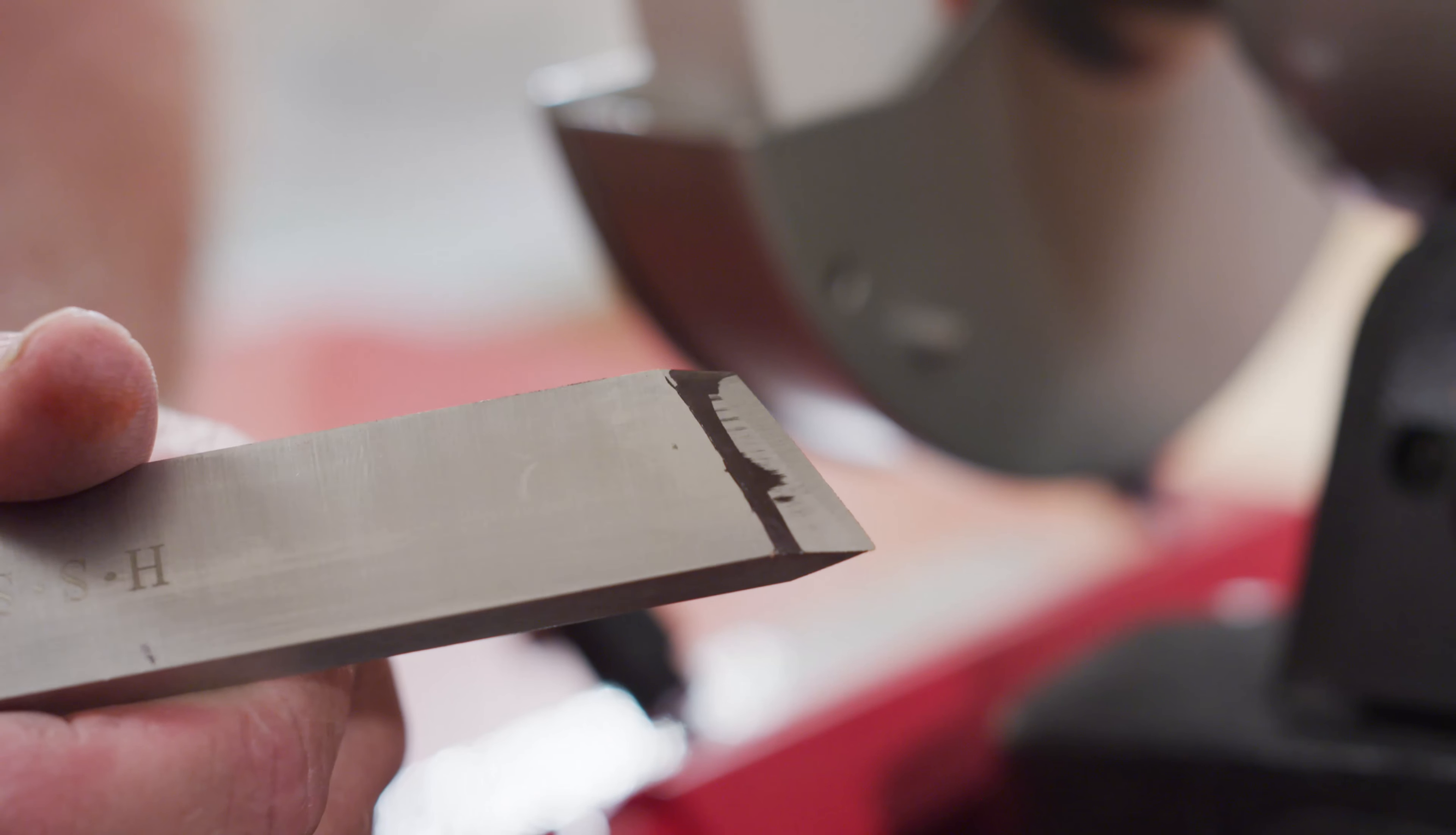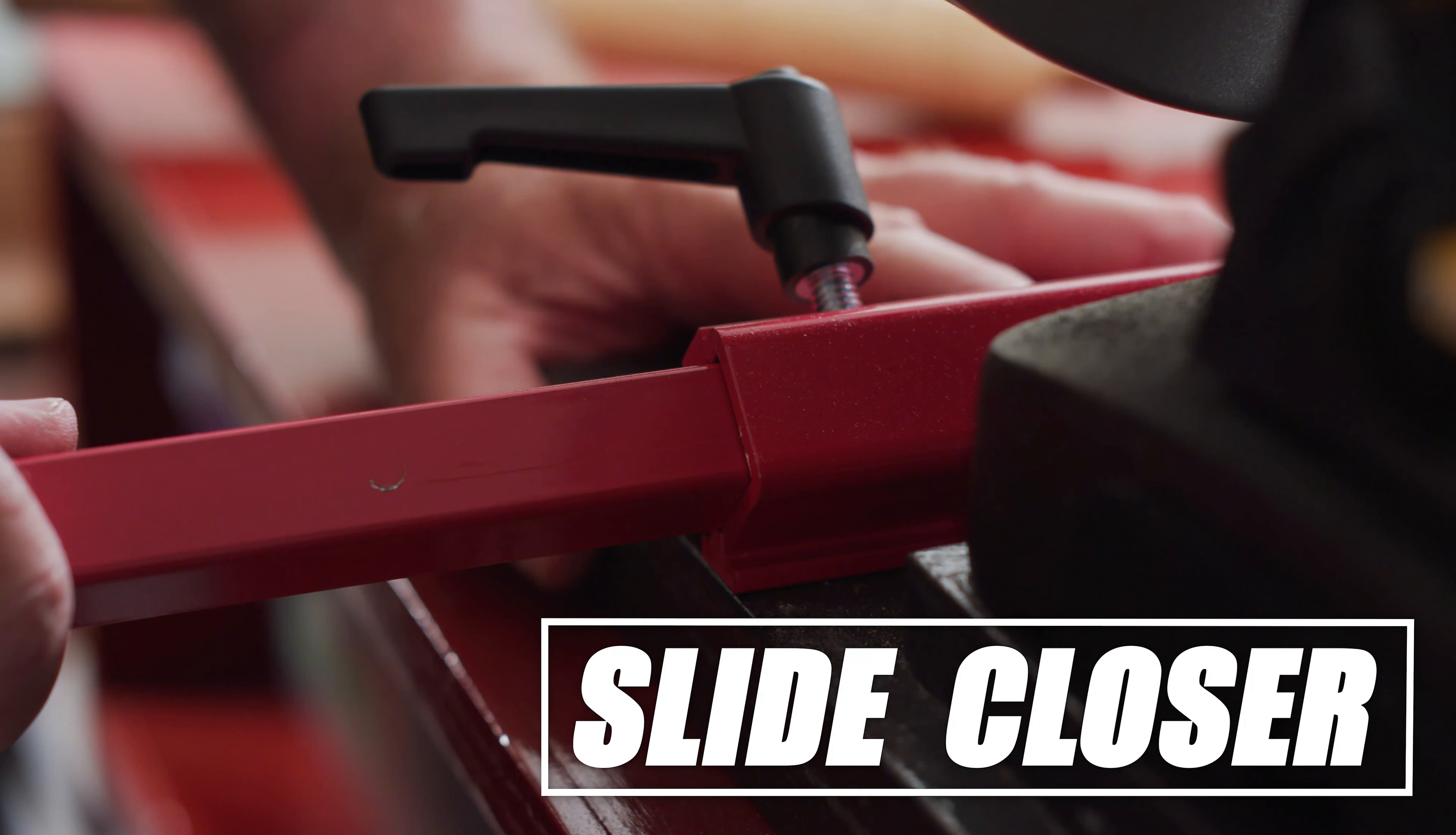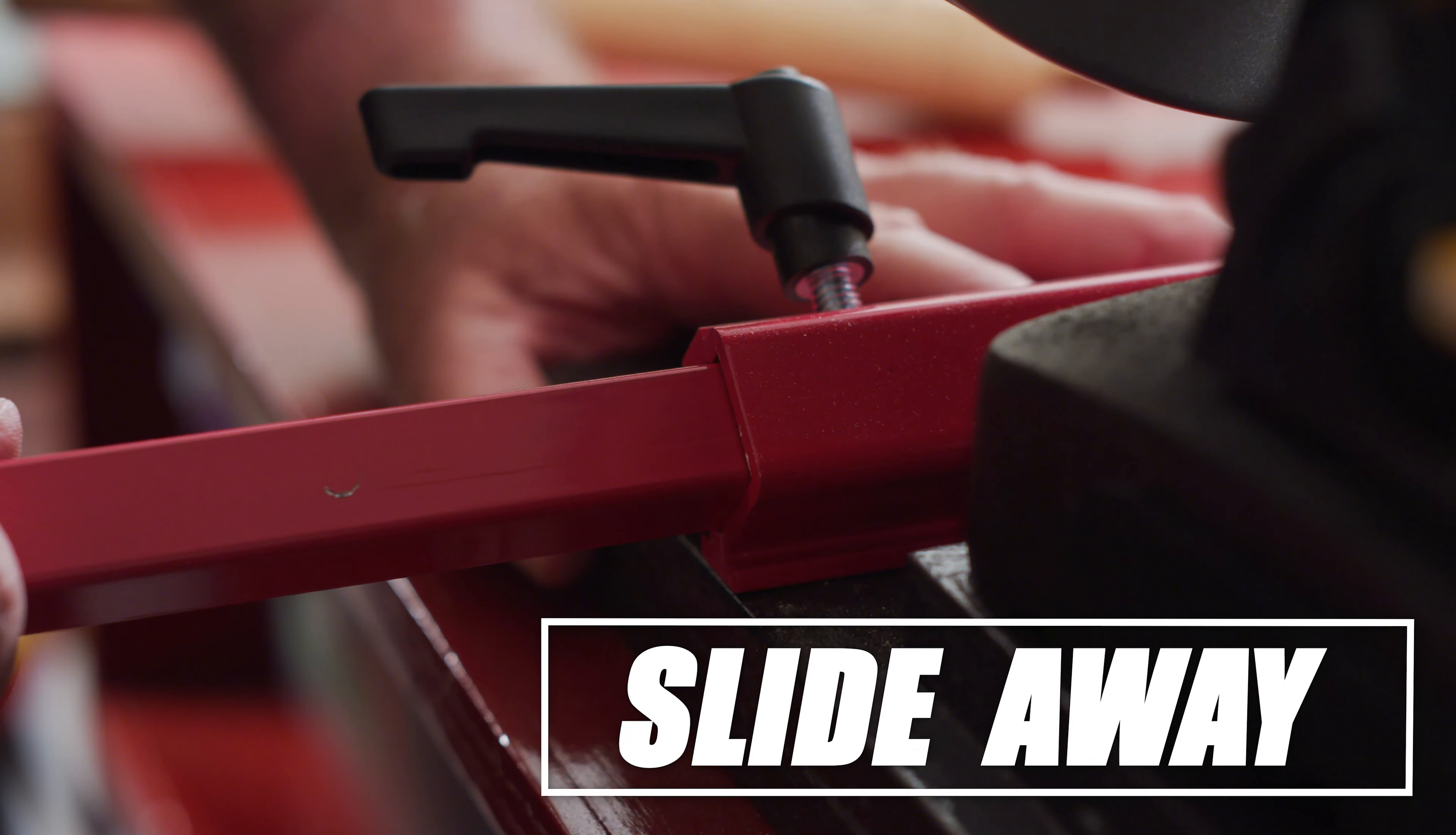If the sharpened area is more at the point of the bevel, slide the extension arm slightly closer to the wheel. If the sharpened edge is more towards the heel, move the adjustment arm slightly away from the wheel.